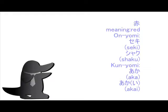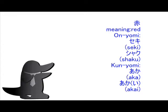Today's Japanese Practical Kanji is this. The main meaning of this kanji is red. In onyomi writing, you can read: seki, shaku.